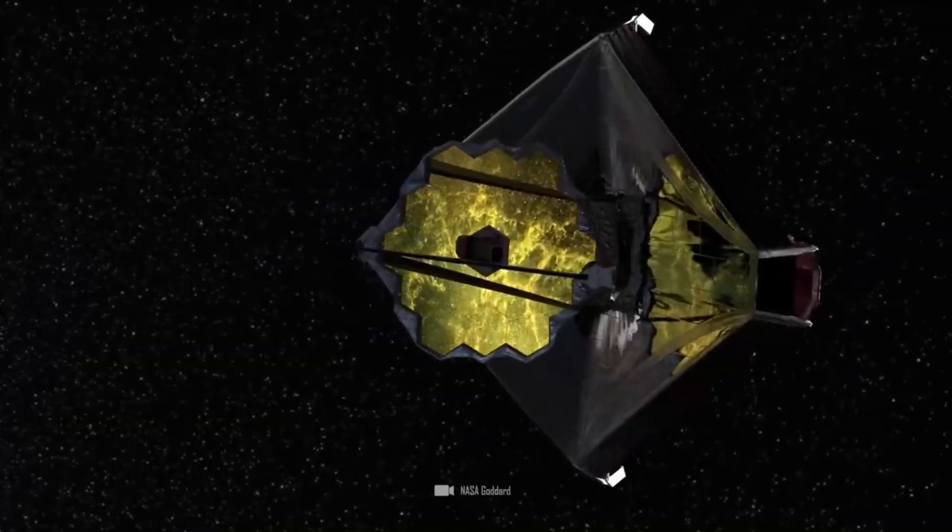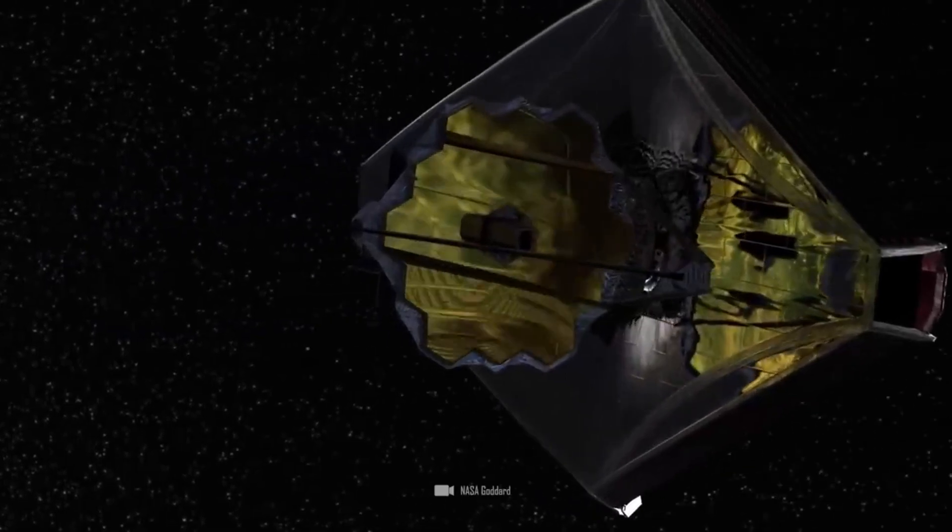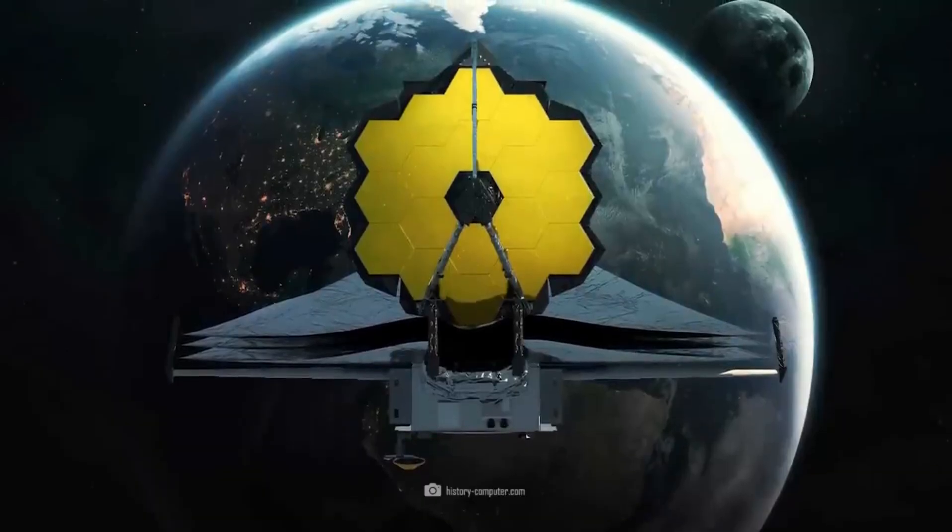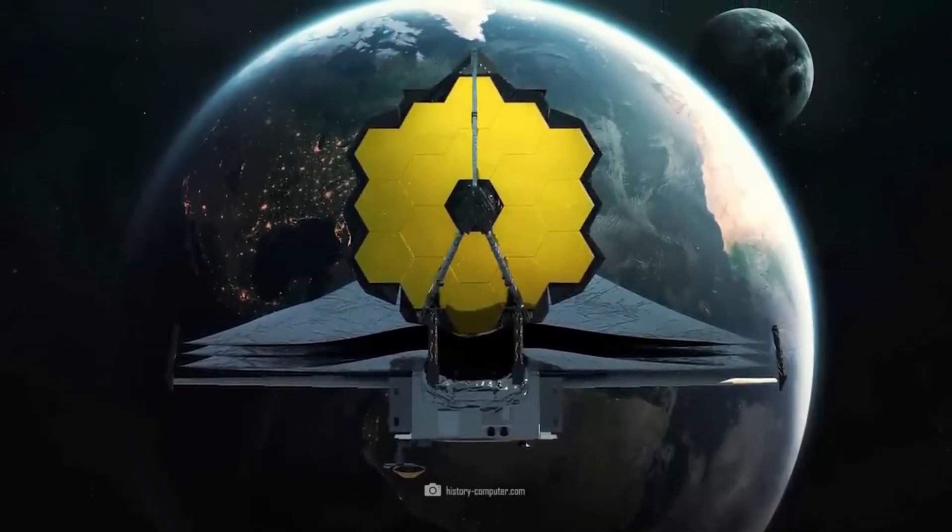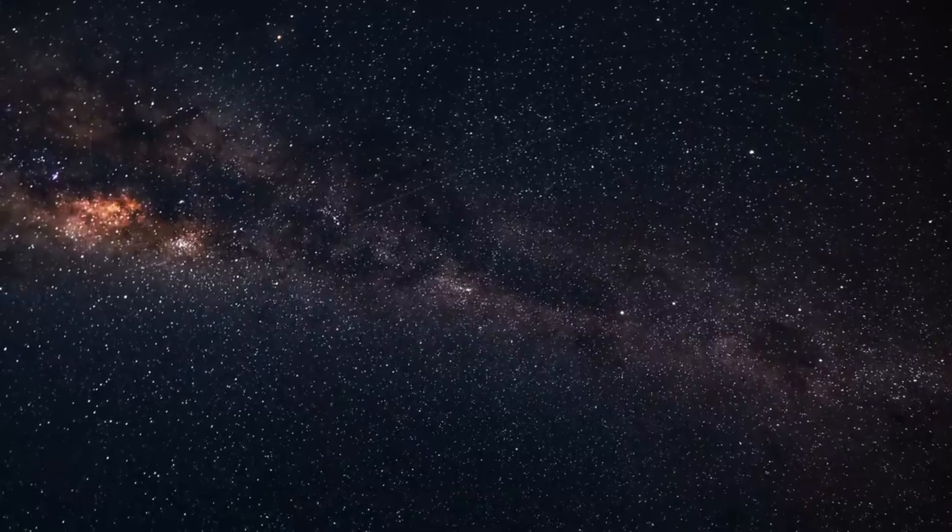Galileo Galilei was put under house arrest in the 17th century for his claim that the earth revolved around the sun, and a few centuries later, the church finally recognized that the earth was round.